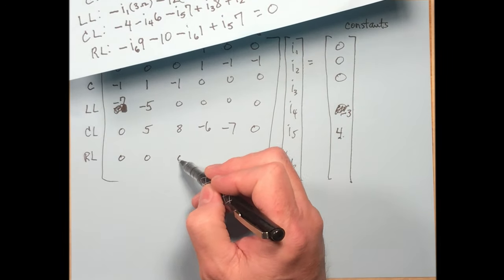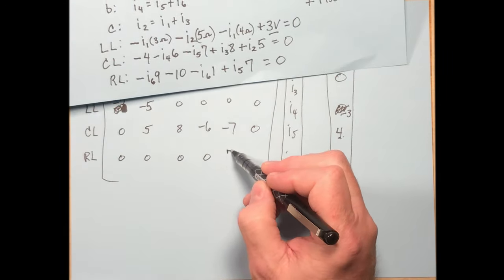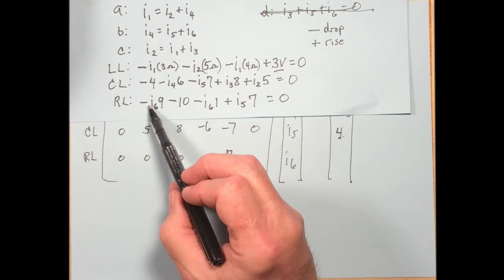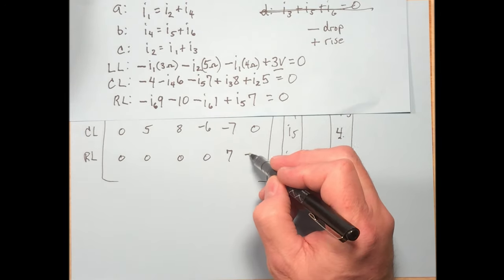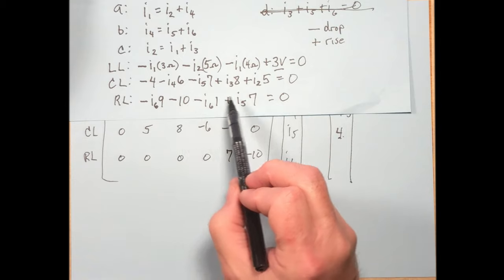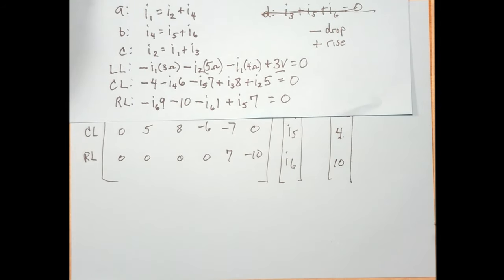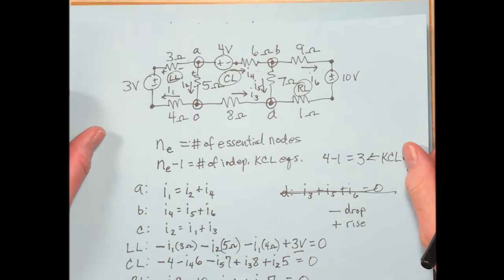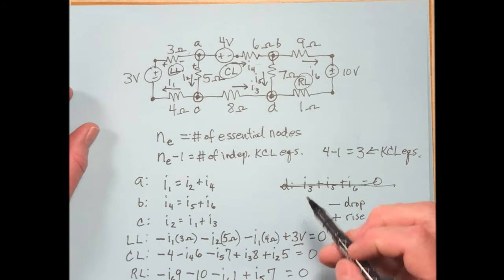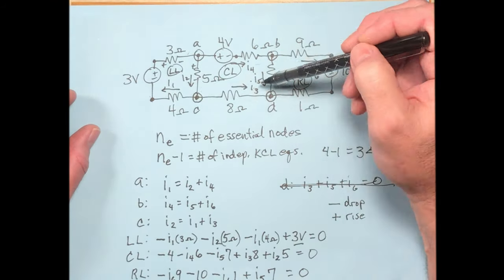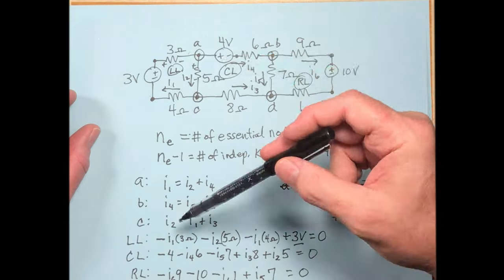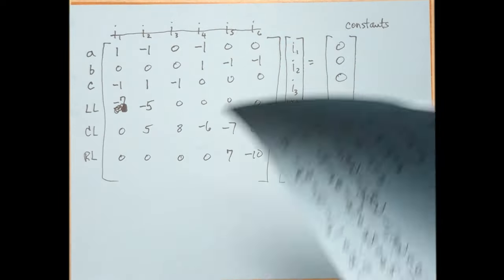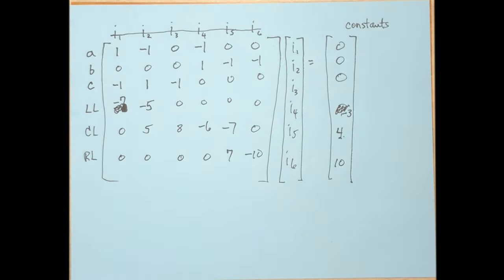Now that we have I0, solve for V0. Since I0 enters the positive terminal of the 4-ohm resistor, we apply Ohm's law with a positive sign: V0 equals I0 times 4 ohms = 6 times 4 = 24 volts. So I0 = 6 amps and V0 = 24 volts, found quickly using KCL.